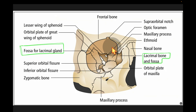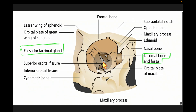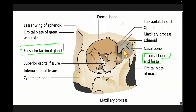The eye lies within the bony orbit, which takes the shape of a four-sided pyramid. Inside the orbit is the optic canal (optic foramen), allowing the optic nerve to pass through. The superior and inferior orbital fissures allow blood vessels and cranial nerves to pass through — the specific structures will be discussed in detail later. The lacrimal gland occupies the superolateral aspect of the orbit.